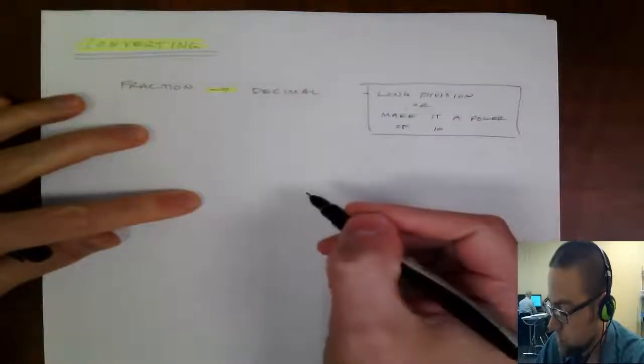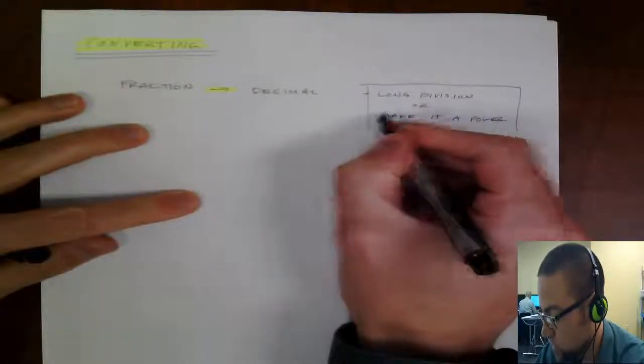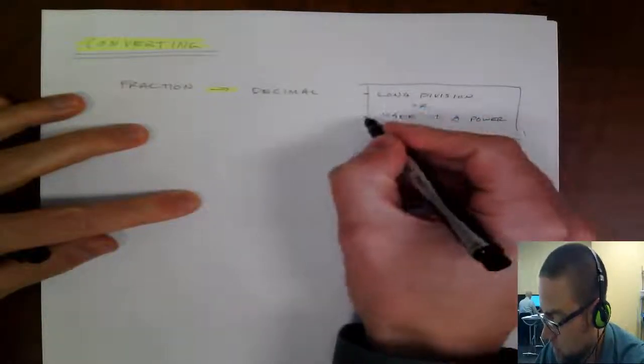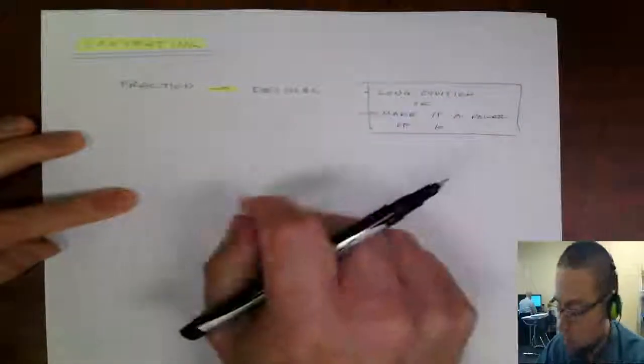So one way to do it, and this always works, is using long division. Or you can make it a power of 10. And this is kind of like a shortcut method, so if you can't make it a power of 10, then you have to go back to using long division.